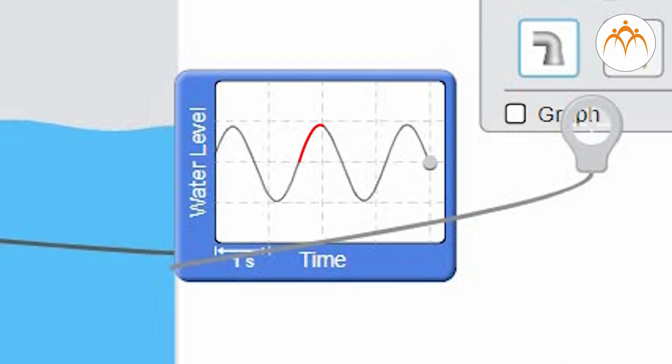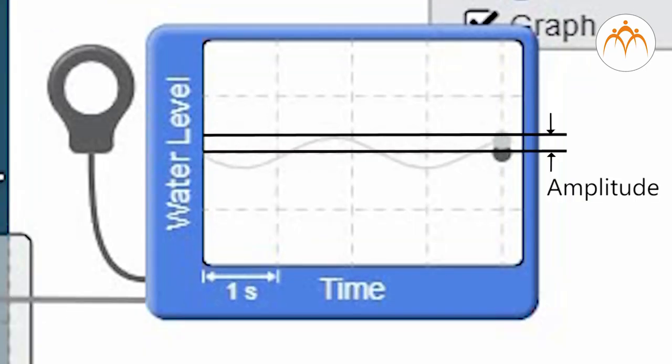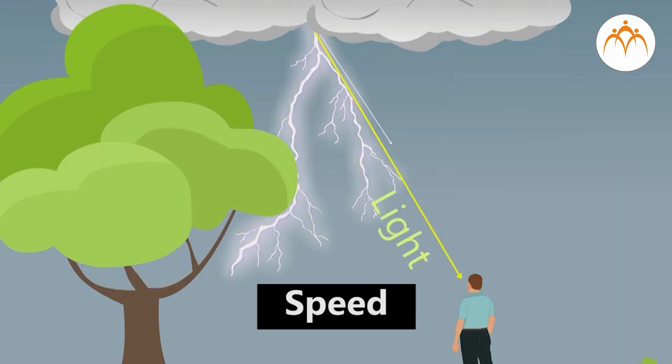In order to describe waves, we looked at its properties like period, frequency, amplitude, wavelength and speed.